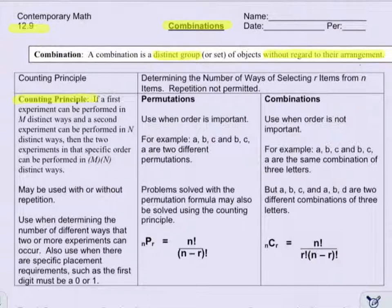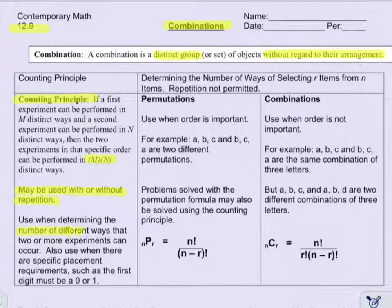The first one is the counting principle. We've gone over this for a while — basically you just multiply the ways that the experiments can be done in that order. The counting principle may be used with or without repetition, and you use it when determining the number of different ways two or more experiments can occur. We also use this when there are specific placement requirements, such as the first digit must be a zero or a one.